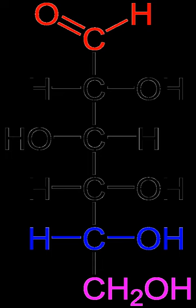The saccharides are divided into four chemical groups: monosaccharides, disaccharides, oligosaccharides, and polysaccharides. Monosaccharides and disaccharides, the smallest lower molecular weight carbohydrates, are commonly referred to as sugars. The word saccharide comes from the Greek word meaning sugar. While the scientific nomenclature of carbohydrates is complex, the names of monosaccharides and disaccharides very often end in the suffix "-ose".